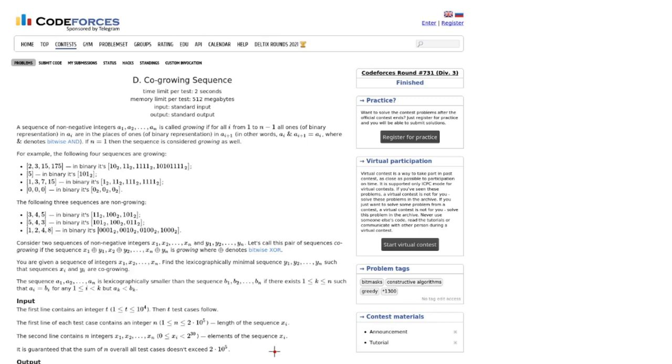In case you want to solve this problem, the link is provided in the description. Let's read the problem. A sequence of non-negative integers a1 to an is called growing if for all i from 1 to n-1, all ones in ai are in the place of ones.